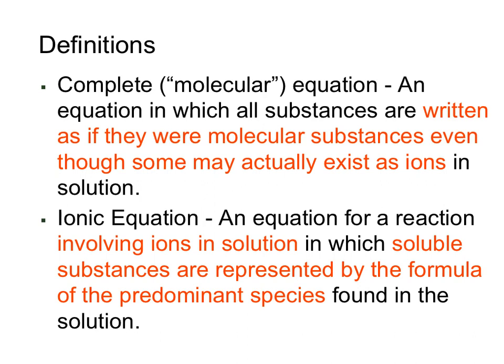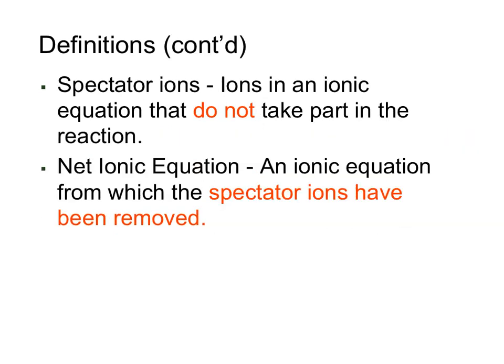We will write precipitation reactions in a couple of different ways. We have what we call the complete or molecular equation, which is an equation in which all substances are written as though they are molecular substances, even though some may actually exist as ions in solution. We also have what we call ionic equations, which is the more realistic depiction of what is actually occurring, since ionic equations show us the ions that are actually in solution. We also have spectator ions — ions that are in an equation but do not necessarily take part in any reaction. We will then also be writing net ionic equations, which is an ionic equation in which the spectator ions have been removed. A net ionic equation essentially shows us the principal players in the reaction — the ions actually participating in the precipitate formation.